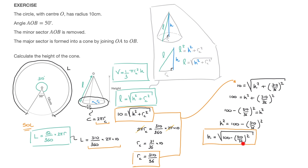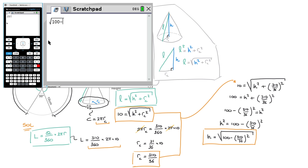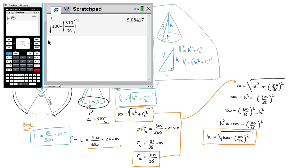All we need to do now is enter all of this in our calculator and calculate. You can see my TI Inspire Cx on the screen. I type the square root, then 100 minus (310 divided by 36) raised to the power of 2, then close the square root. I check everything typed and click enter. Copying the result and rounding to three significant figures, we can state that the height of the cone is h equals 5.08 centimeters. That's the final answer.